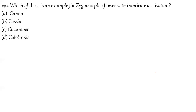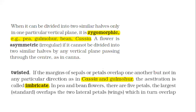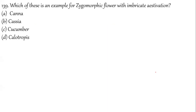Question 139 (continued): Zygomorphic examples — Cassia, Gulmohar, Pea, Bean. Imbricate aestivation examples — Cassia and Gulmohar. In the options, only Cassia is given, so that's the answer. This shows a flower that is zygomorphic in nature and also shows imbricate aestivation.